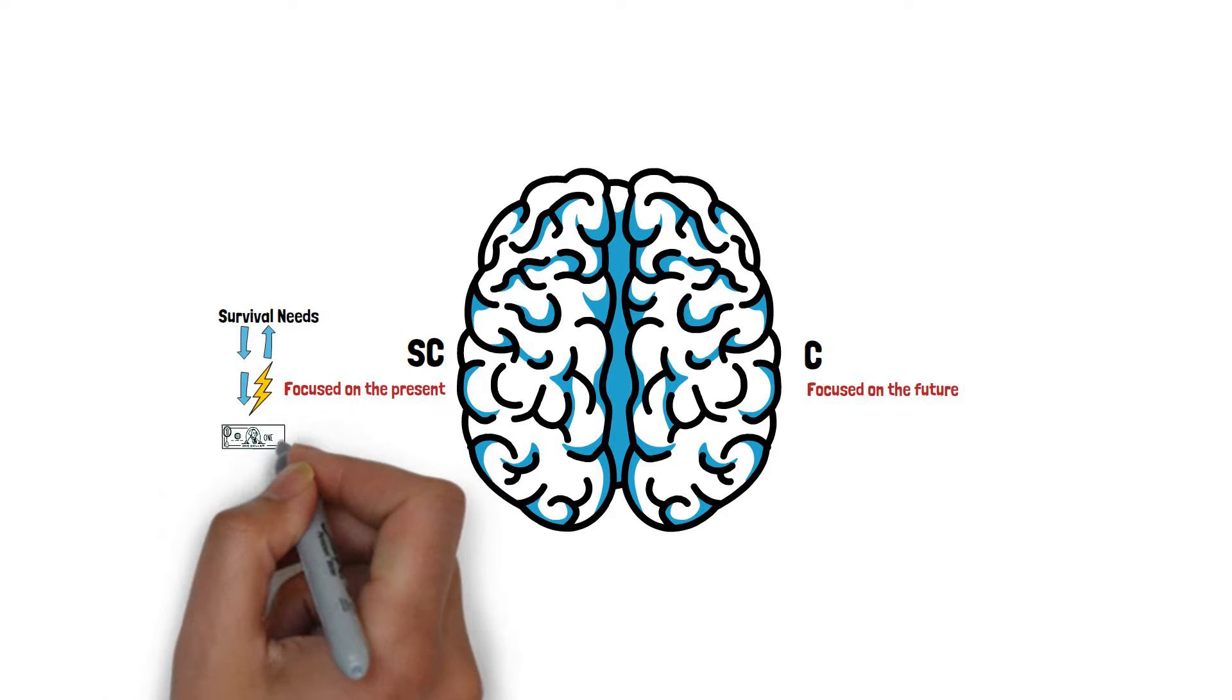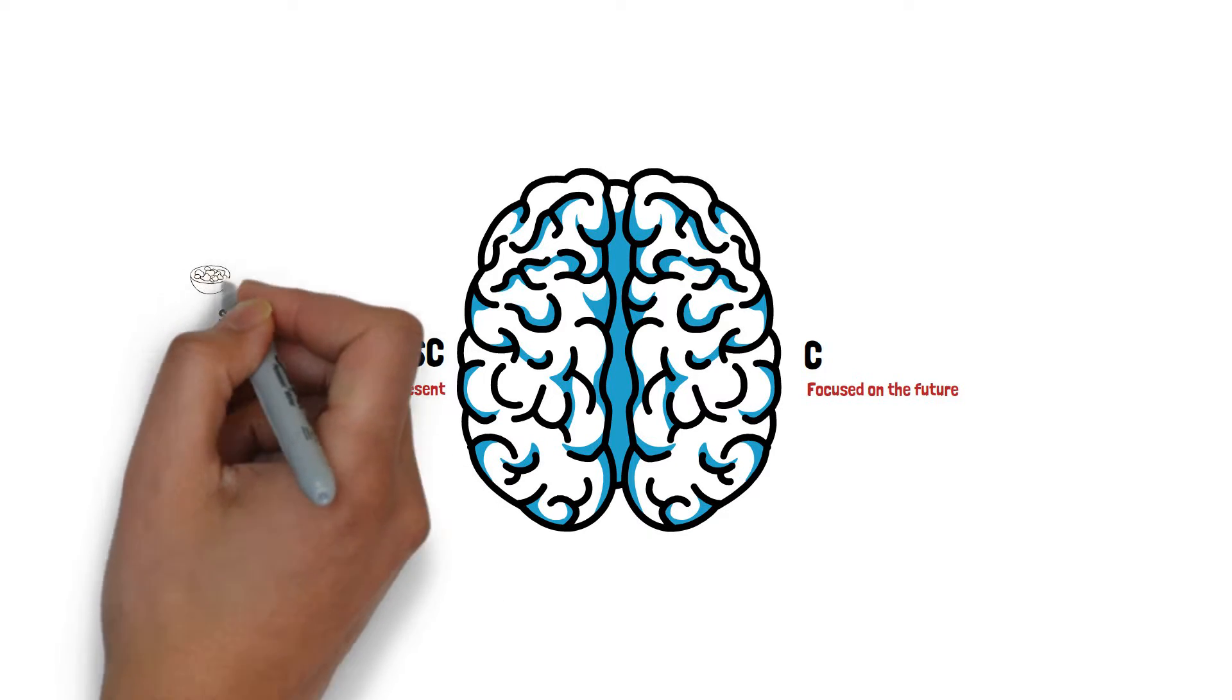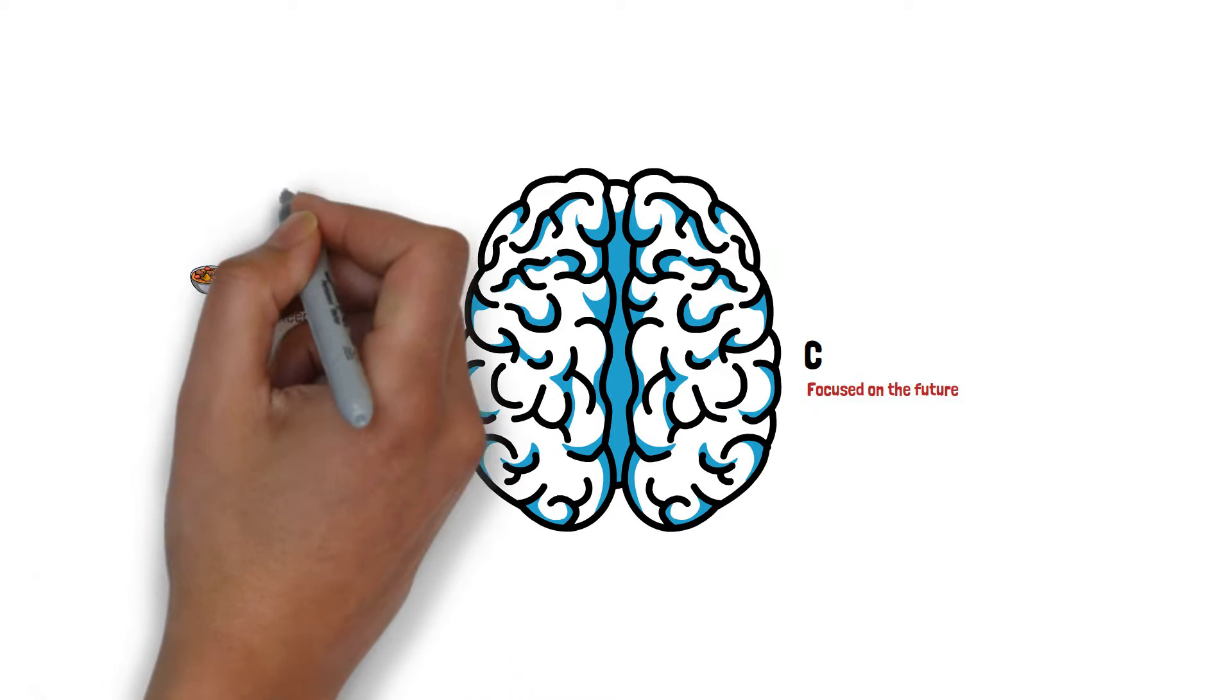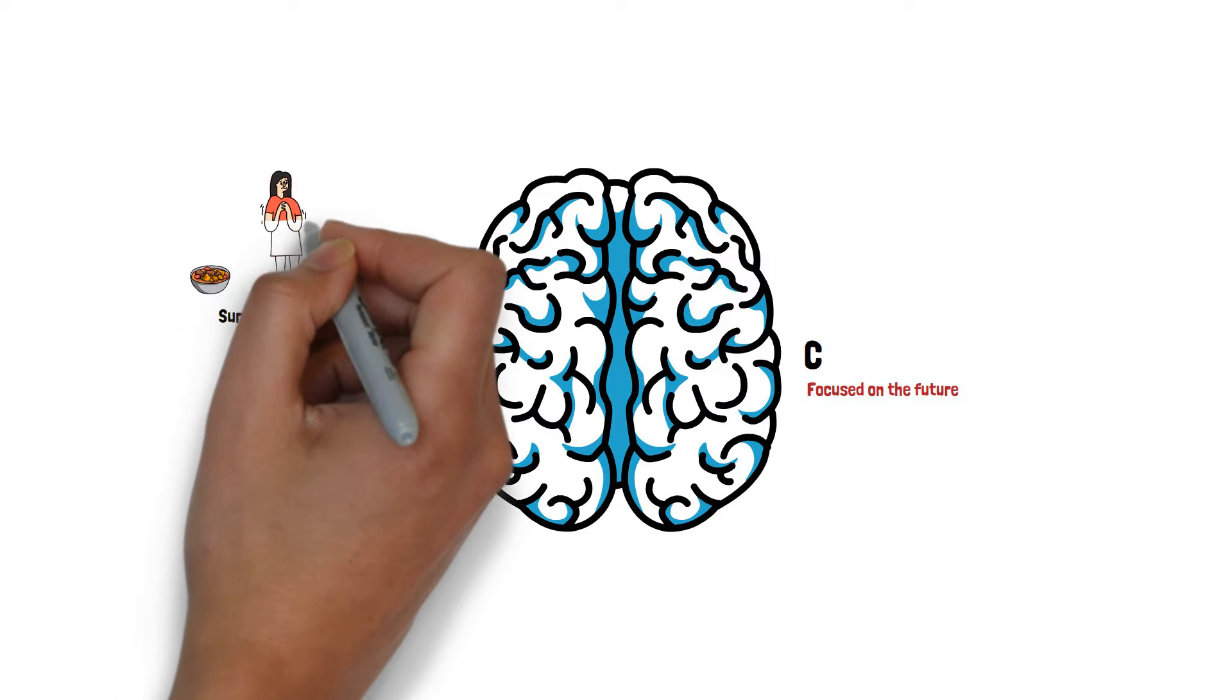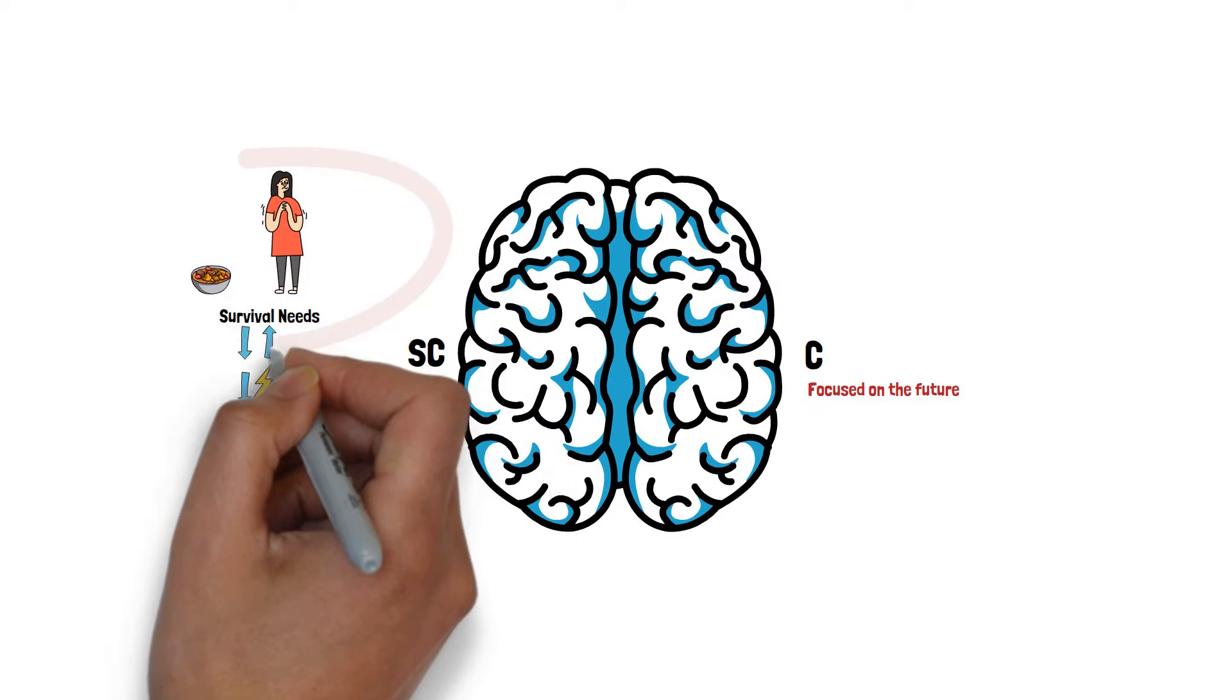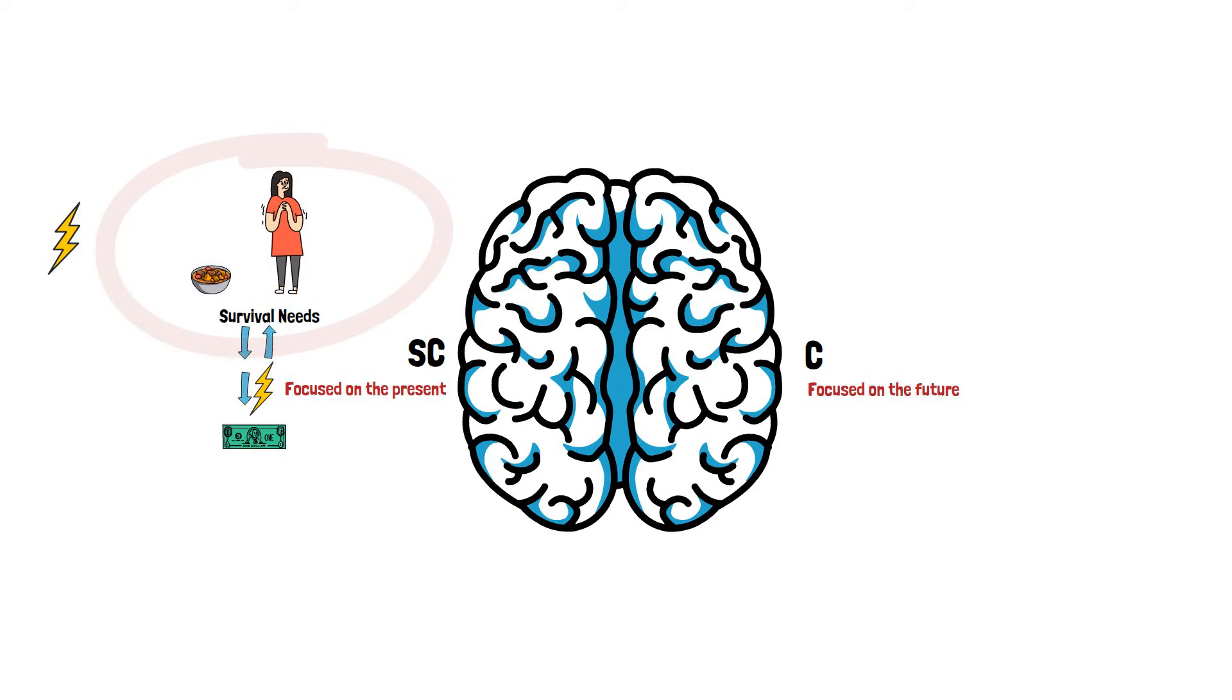What will light a fire under your subconscious is if you are hungry and don't know where your next meal is coming from, or you feel that your safety is in jeopardy. When your survival is in question, your subconscious is very happy to spend energy. But if you are safe, it wants to reserve it.